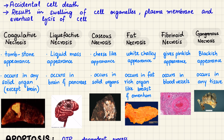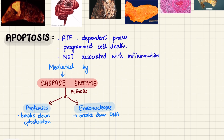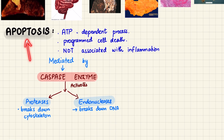Gangrenous necrosis is not a distinct type but a clinical term. It occurs when large areas of tissue die, often due to ischemia. Dry gangrene results from coagulative necrosis and appears black and shriveled, often seen in diabetes or frostbite. Wet gangrene involves liquefactive necrosis, usually due to infection, and appears swollen and oozing.